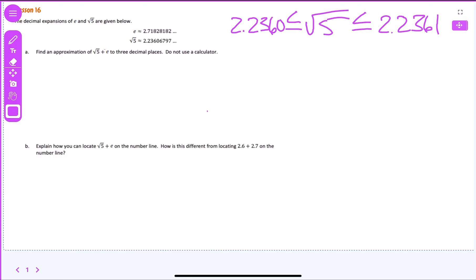And it's less than 2.2361. Everybody see that? It's in between those. So now we're going to say, well, what about Euler's number? Well, it's greater than 2.7182, but it's less than 2.7183. And I'm lining these up for a reason like this.